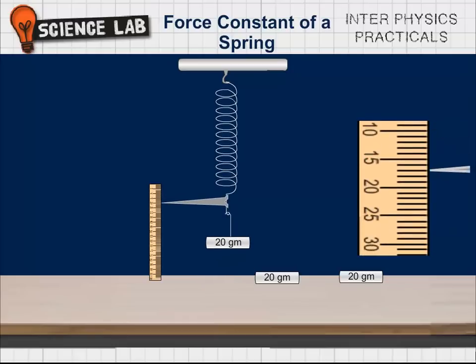3. Set the vertical wooden scale such that the tip of the pointer comes over the scale. 4. Note the reading of the position of the tip of the pointer on the scale. Record the reading in loading column against zero load.